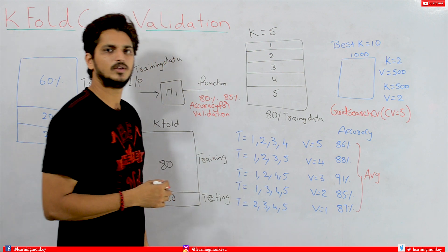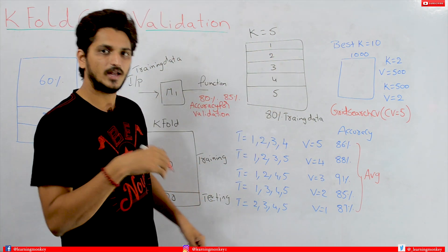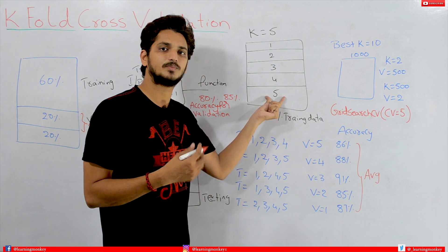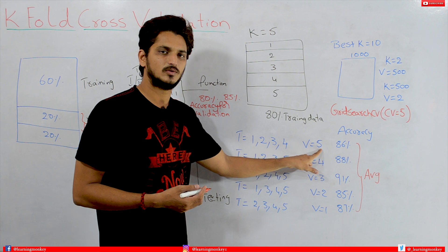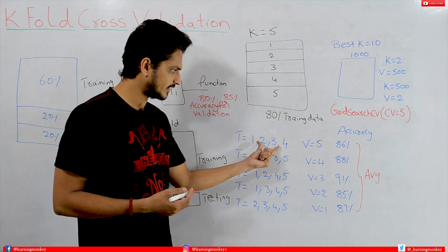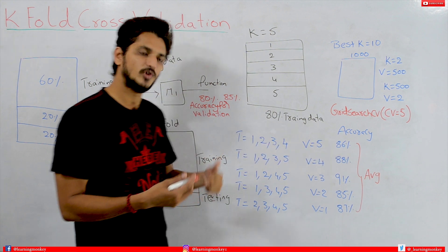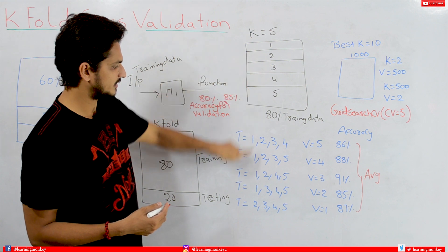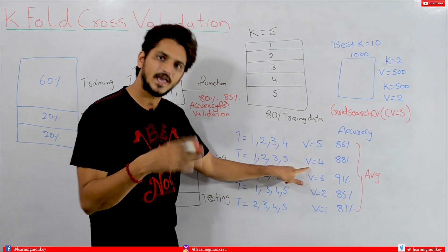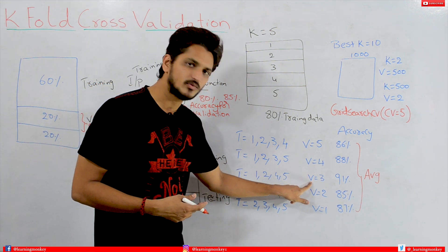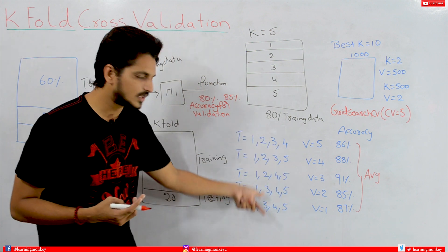Parts 1 through 5. In the first iteration, we take parts 1, 2, 3, and 4 for training and part 5 for validation. We train on those 4 parts, get a function, and use it to validate on part 5 — getting, say, 86% accuracy. In the second iteration, we train on parts 1, 2, 3, and 5, and use part 4 for validation. Next, we train on parts 1, 2, 4, and 5, using part 3 for validation. We repeat this 5 times total, rotating which part is used for validation each time.